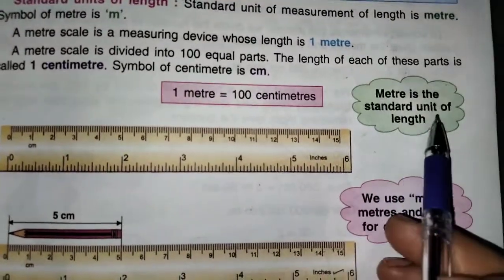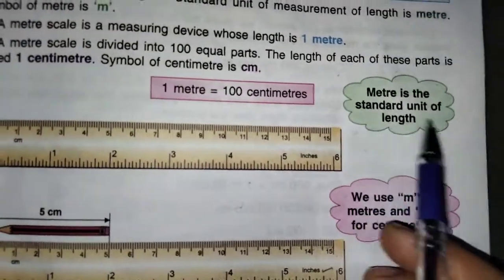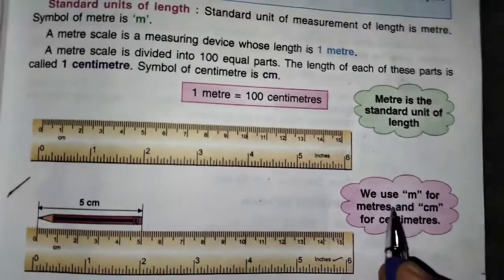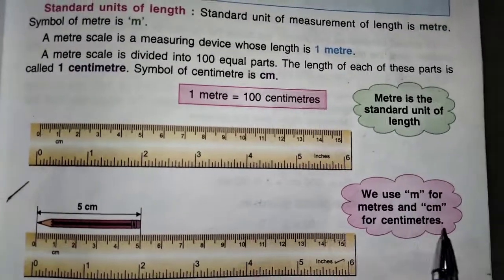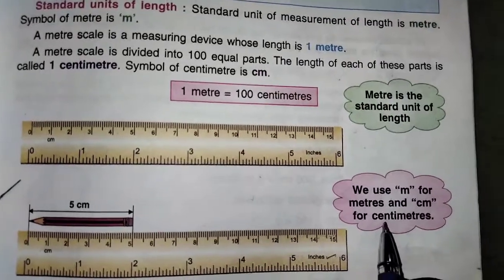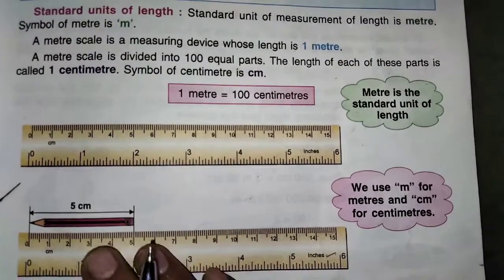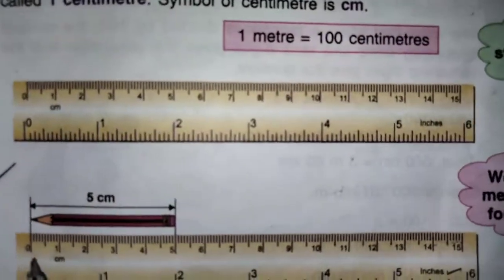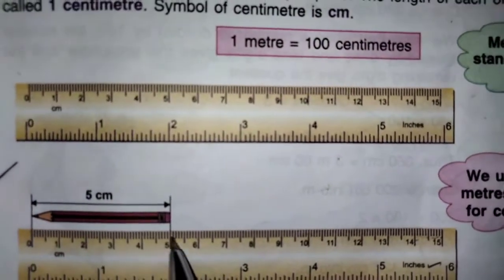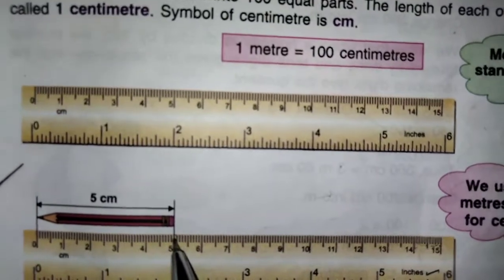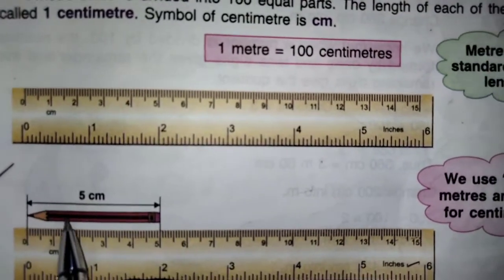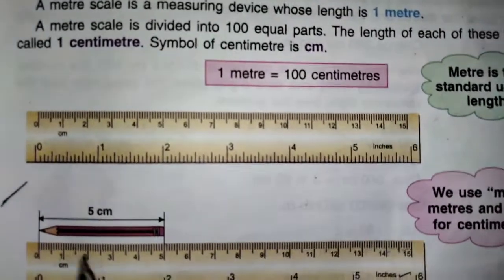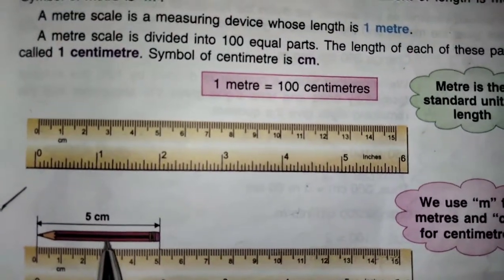Meter is the standard unit of length. We use M for meters and CM for centimeters. Now here, we have to draw a 5 centimeter line. See here — it will start from 0 and end at 5. That is, this line distance — the pencil length is 5 centimeters.